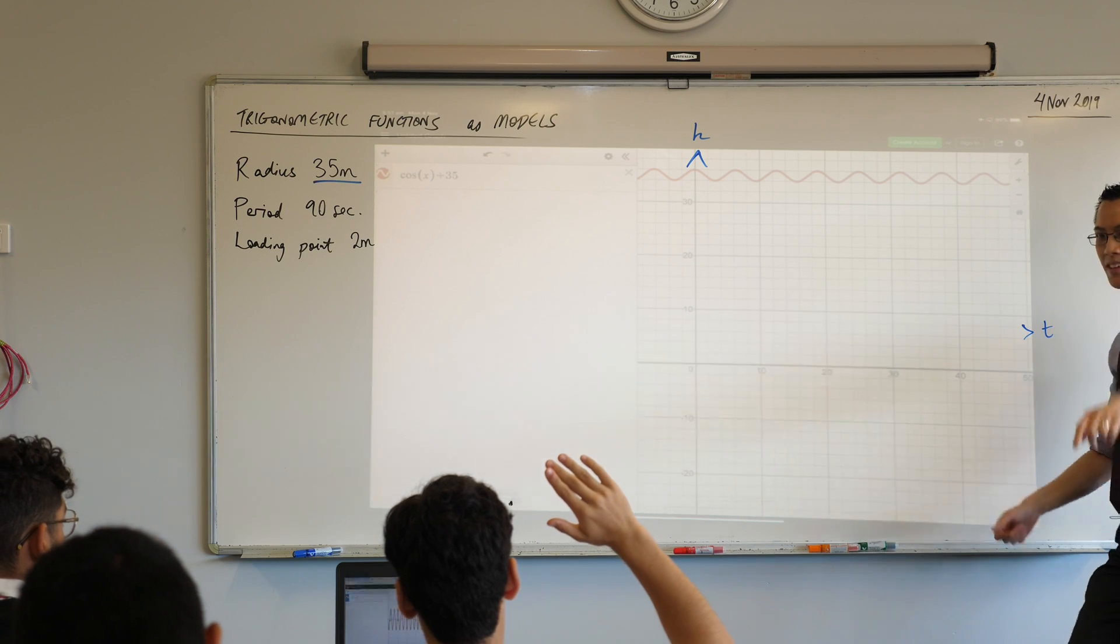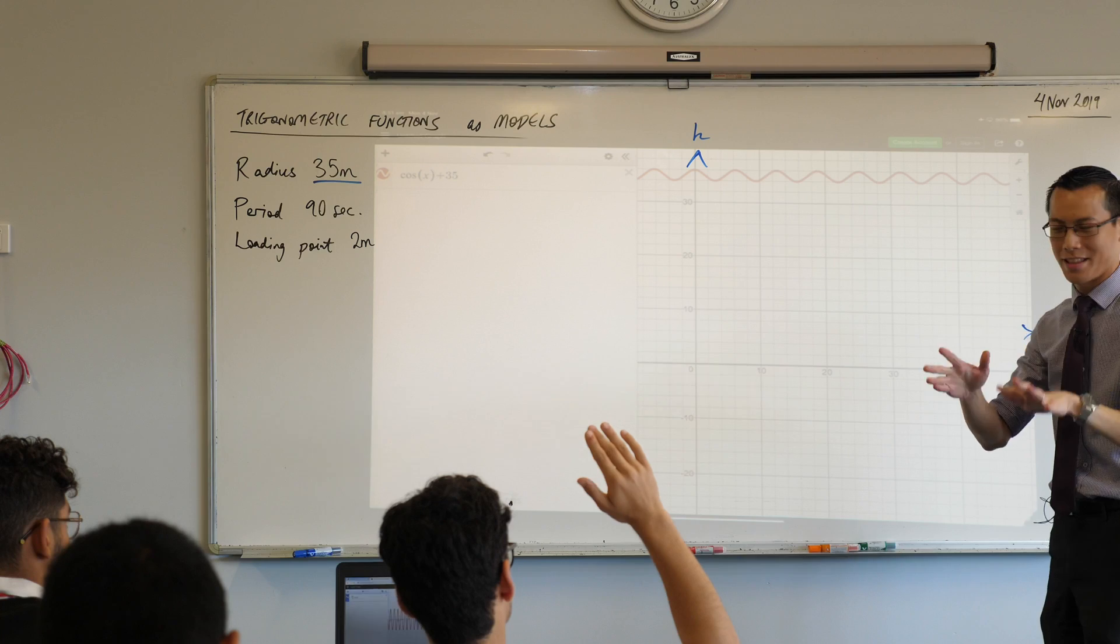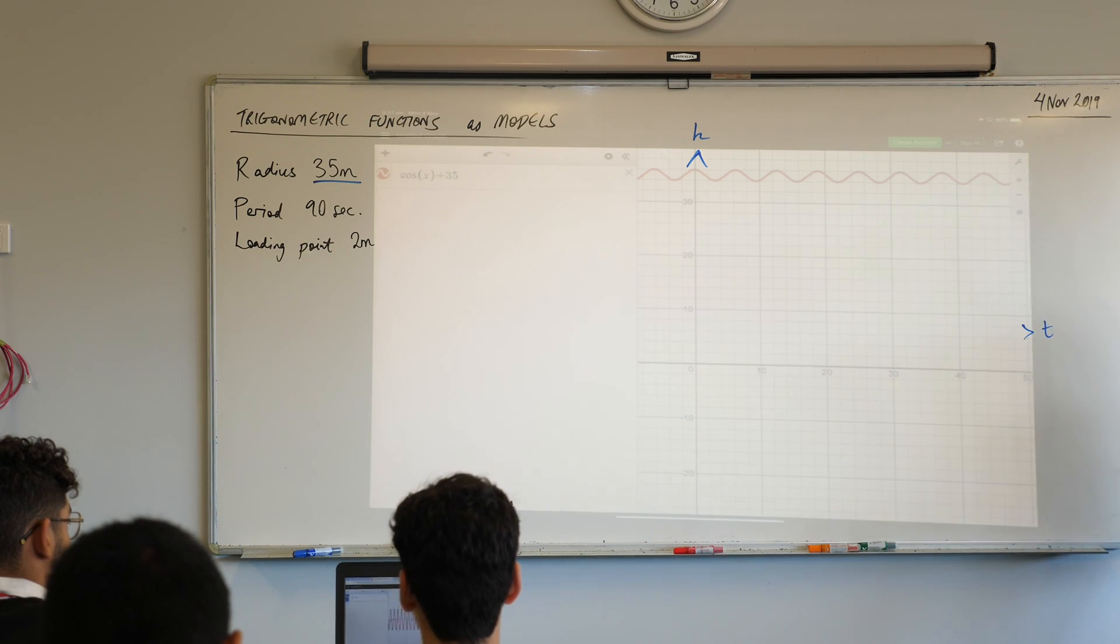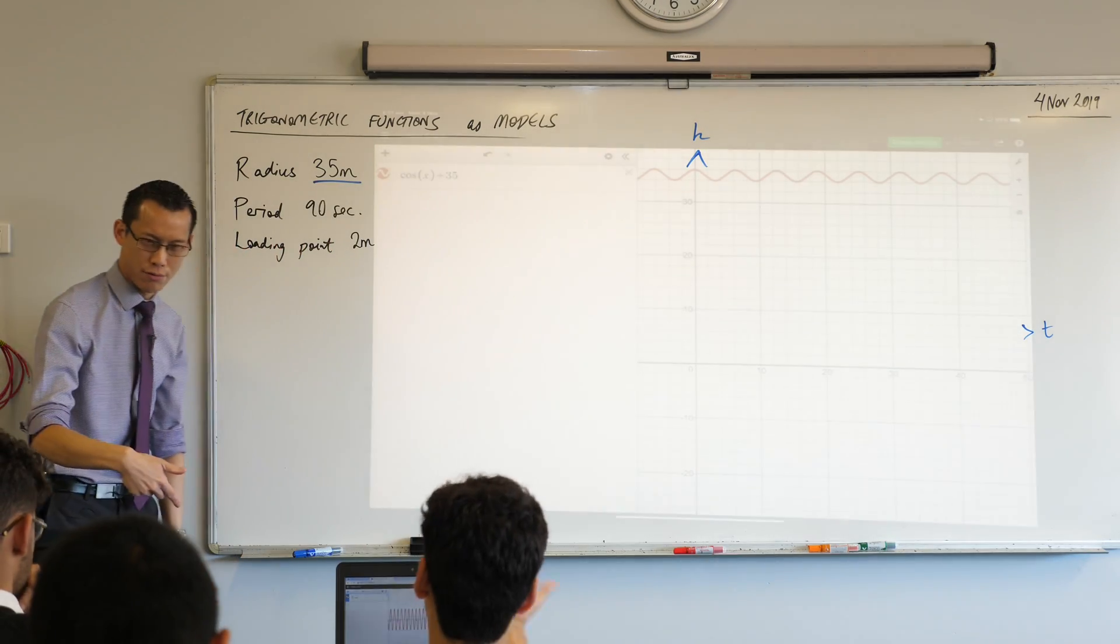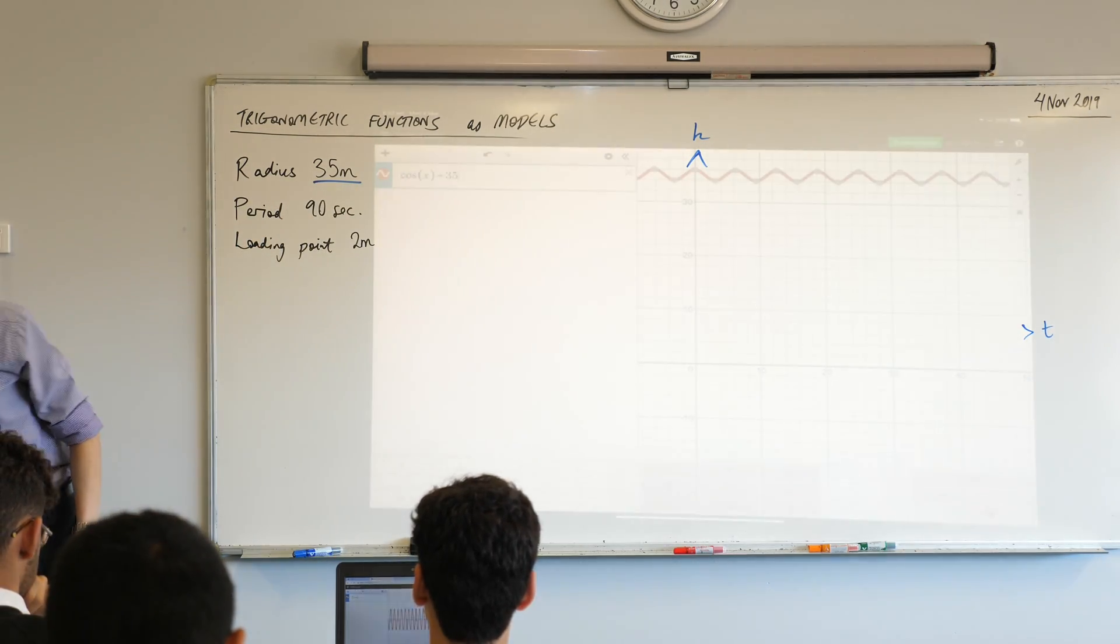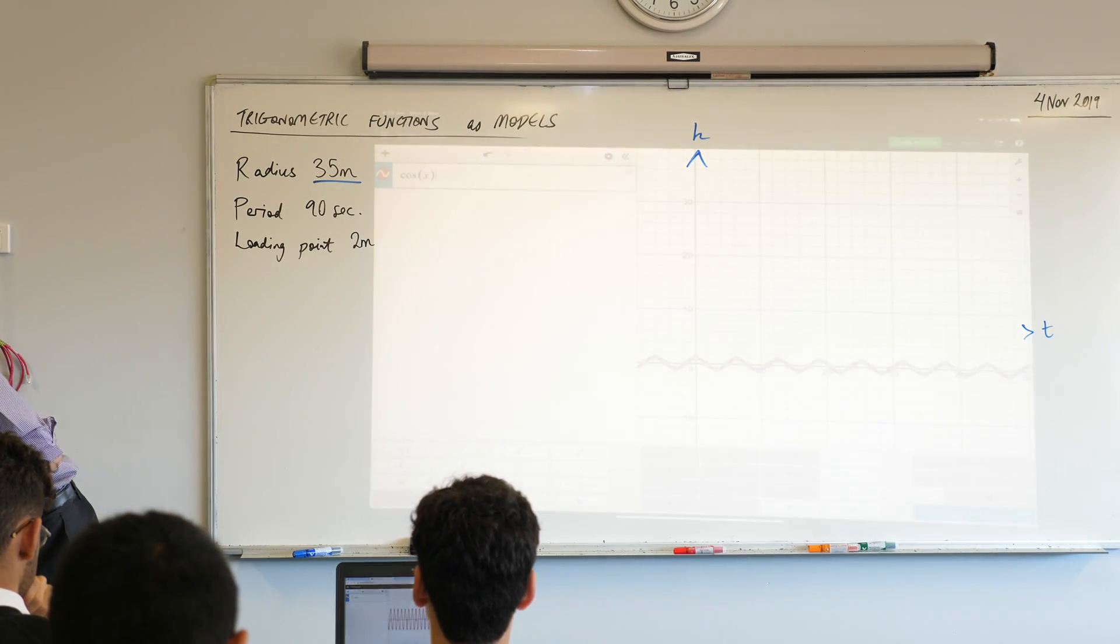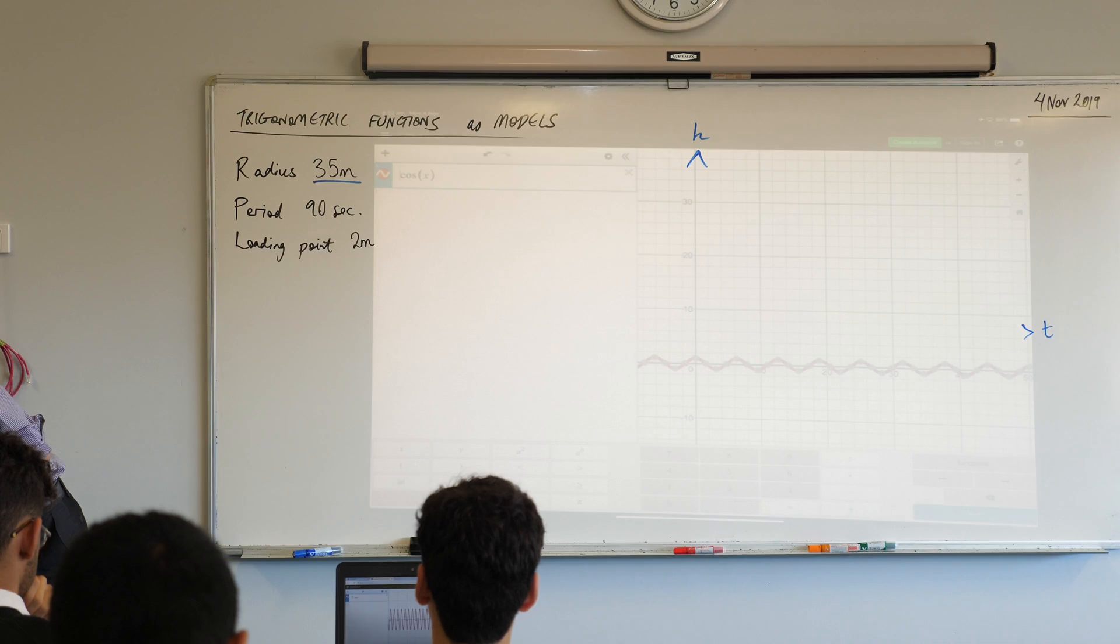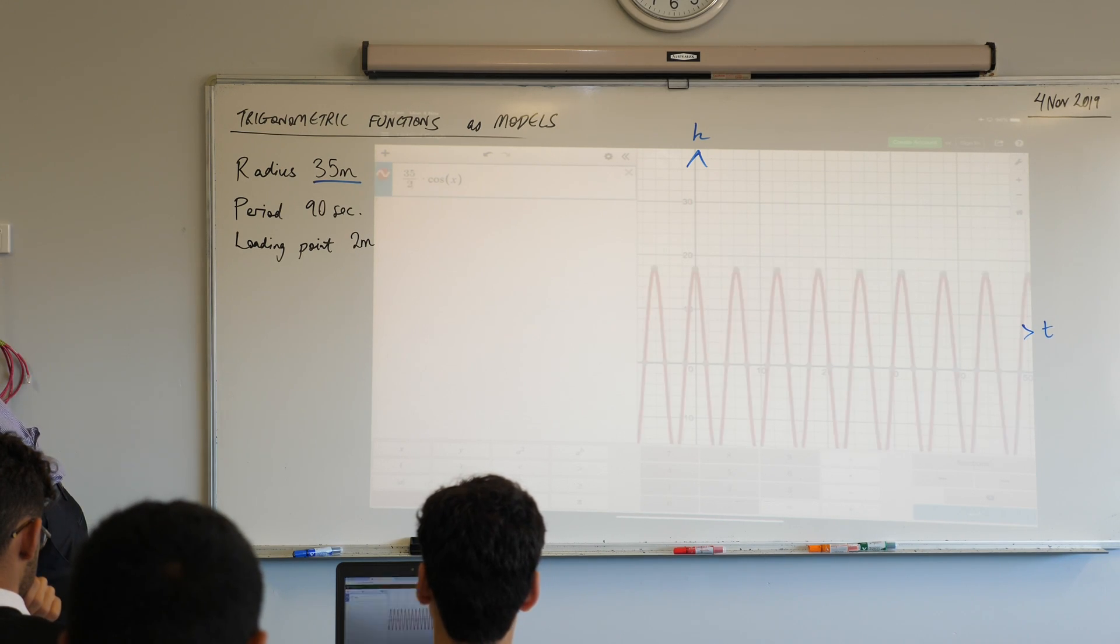Alicia, you had your hand up. You were just stretching. Oh, okay. Zachy, what are you thinking? I put 35 over 2 before cos x. 35 over 2 at the front here. Okay, let's try that. Should I get rid of the plus 35 for now? We'll come back to that. Okay, so let's do that. And I'm going to take Zachy's suggestion here, multiply 35, was it? Yes. 35. And you said? Over 2. Over 2.